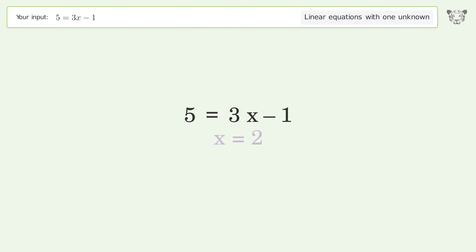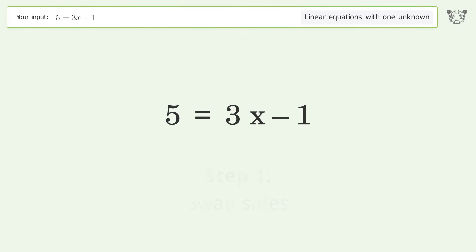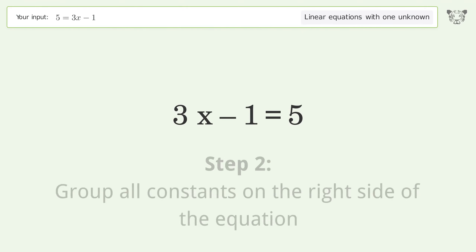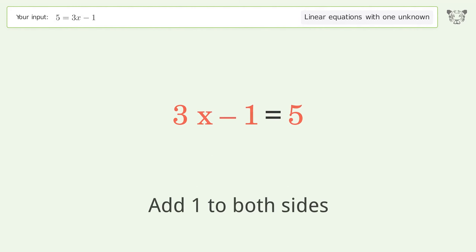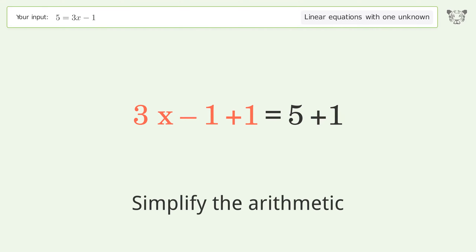Let's solve it step by step. Swap sides, group all constants on the right side of the equation, add one to both sides, and simplify the arithmetic.